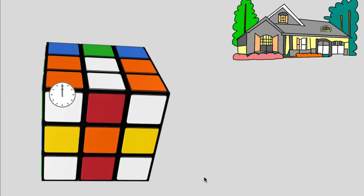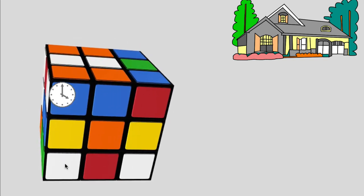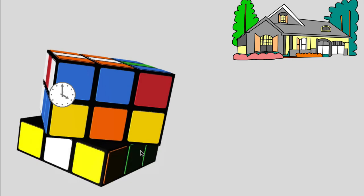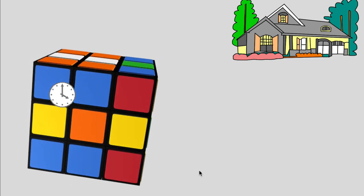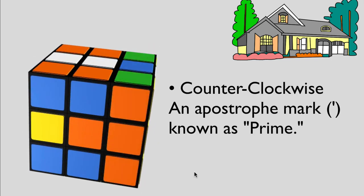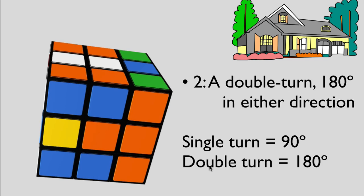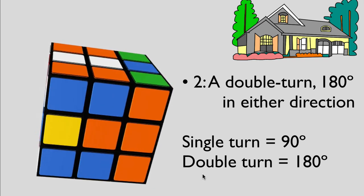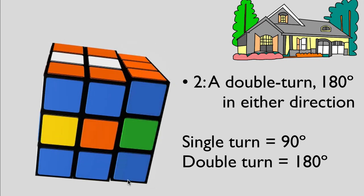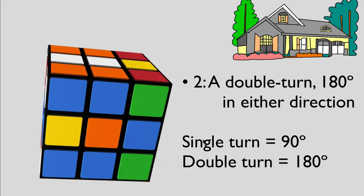So everything is kind of opposite. The upper layer moves to the left for clockwise, but for the down layer, you move to the right for clockwise. Also, I use the term 'prime' to mean counterclockwise — they mean the same thing. And when you see a '2' after a letter, it means a double turn. One turn is 90 degrees and two turns is 180 degrees. For a 180 degree turn, you can turn either direction because the result is the same.